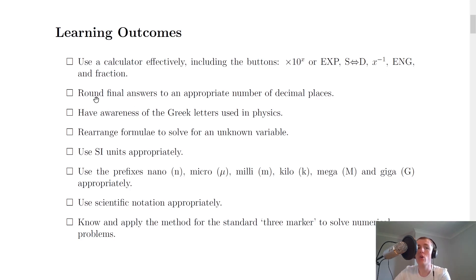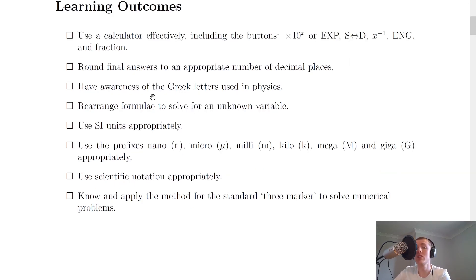You also need to be able to round final answers to an appropriate number of decimal places — one or two decimal places is always going to be sufficient. You also need to have awareness of the Greek letters used in physics. It's only certain ones from the Greek alphabet that we use, and you can see those in the Greek letter video.